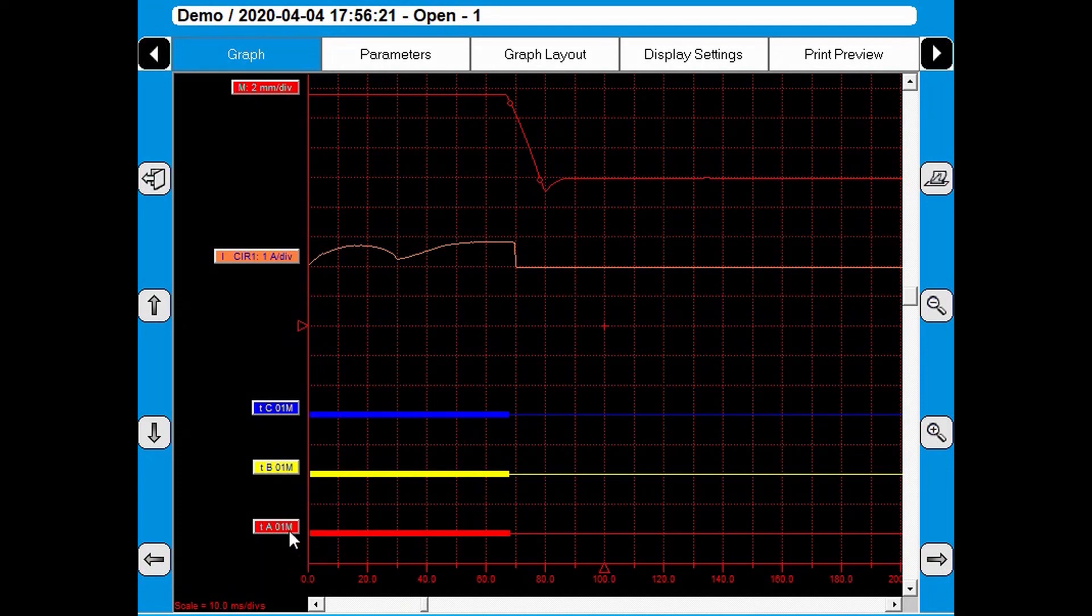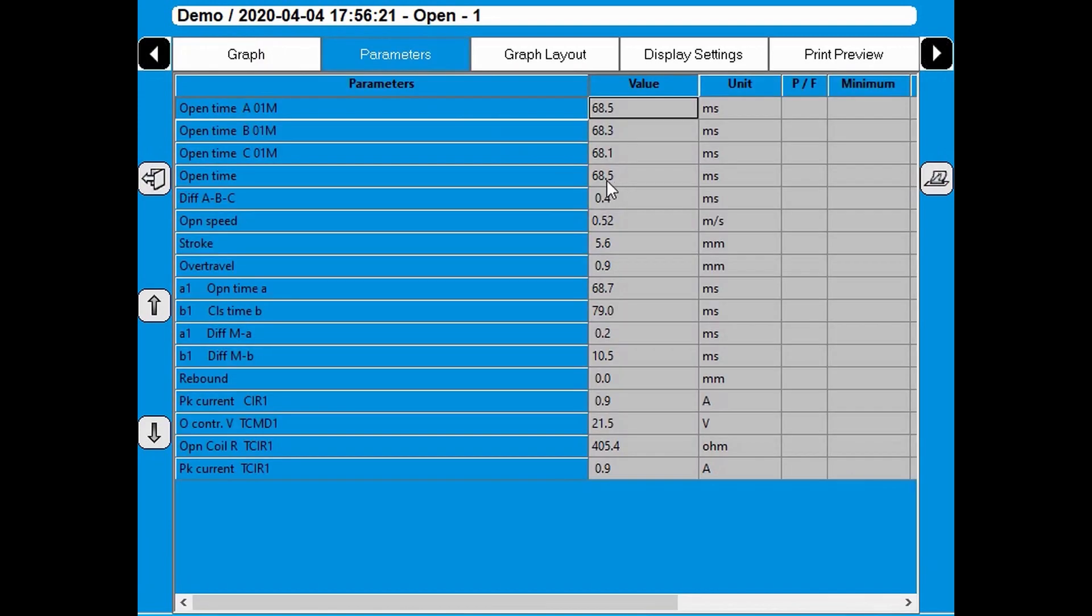And here we can see the results from the open operation. The three timing graphs, the coil current and the motion. And the result as parameters. 68.5.